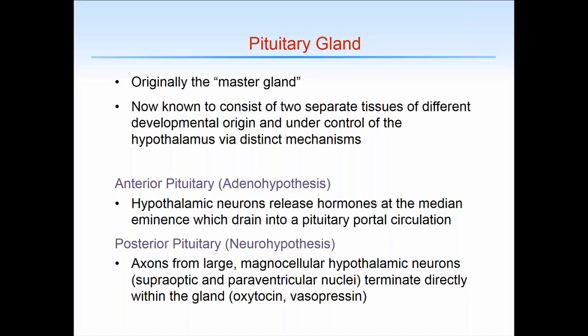The anterior pituitary gland is regulated by hypothalamic neuronal secretions, which are released at the median eminence and drain into the pituitary portal circulation, while the posterior pituitary gland actually consists of axons from hypothalamic neurons. We'll go over these nuclei in a little more detail in a moment.